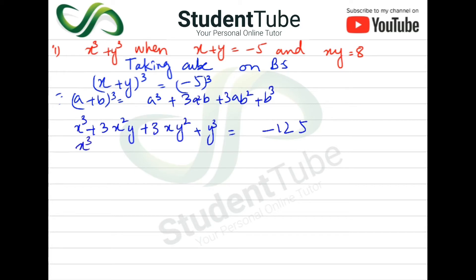Now we will take 3xy common here. There are two terms with 3 and two with xy. When we take xy common, what will happen inside? The rest will be x and y inside. So it becomes: x + y.